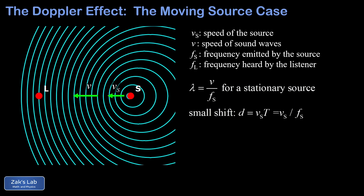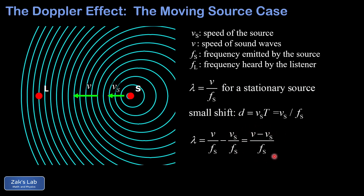The period is the reciprocal of frequency, so the small shift — the decrease in wave crest spacing — is VS over FS. This means the resulting wavelength is shorter: the original wavelength V over FS minus the small shift VS over FS. These share a common denominator, so the wavelength in the direction the source is moving is (V minus VS) divided by FS, where V minus VS is the speed of sound minus the speed of the source.